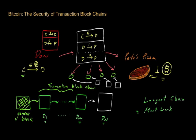He's effectively double spent those Bitcoins, and obviously one of these transactions should be considered fraudulent — the other one should be allowed to go through.